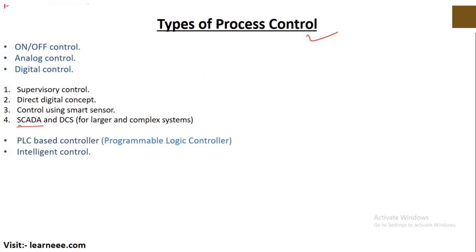There are types of process controls - on-off control, analog control and digital control. There is supervisory control, direct control, control using smart sensors, SCADA and DCS. We have learned about DCS. So today we have talked about SCADA. SCADA is one part of the process control.